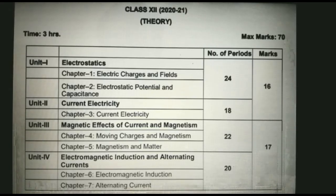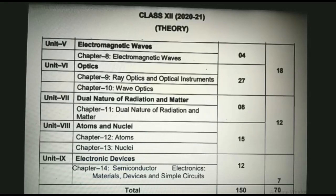Unit 3 consists of two chapters: Chapter 4 moving charges and magnetism and Chapter 5 magnetism and matter. Unit 4 consists of two chapters: Chapter 6 electromagnetic induction and Chapter 7 alternating current. The marks weightage for unit 3 and 4 is 17.